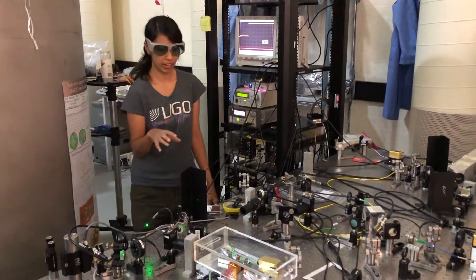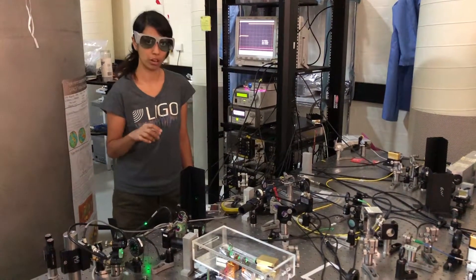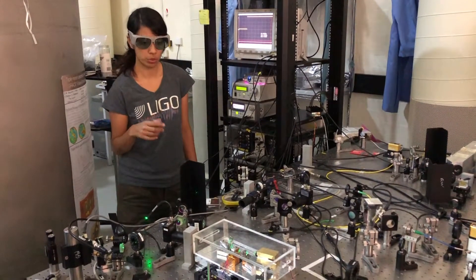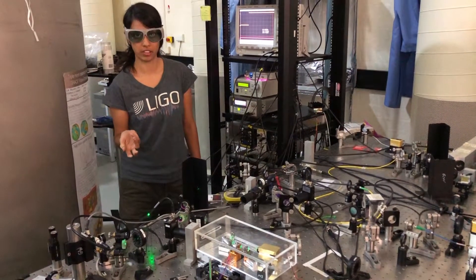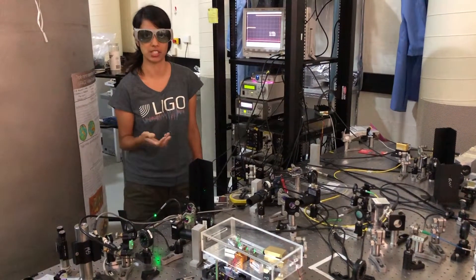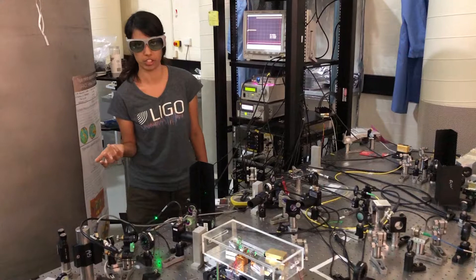So at the moment we're trying to set up an OPO, which is an optical parametric oscillator, which we use in gravitational wave detectors to improve the sensitivity of the detector at various frequencies, so we can detect gravitational waves more efficiently.